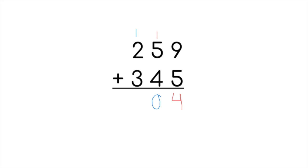And now we can add the digits in the hundreds place. We have 2 plus 3 for 5, and then one more is 6. So our answer will be 604.